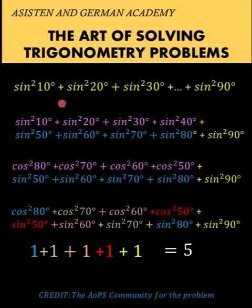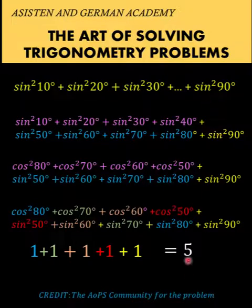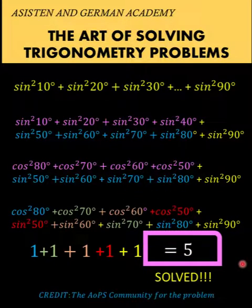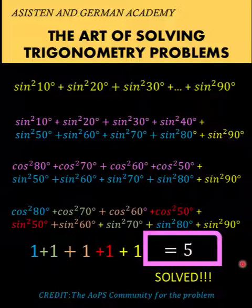So our final answer is: sine squared 10 degrees plus sine squared 20 degrees plus sine squared 30 degrees, all the way up to sine squared 90 degrees, is equal to five. Thank you very much and we hope to see you again in our next video. Bye for now.